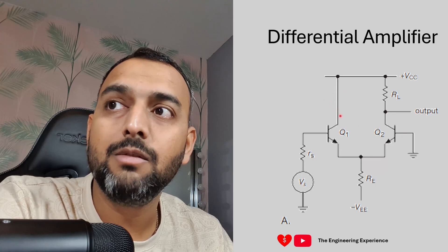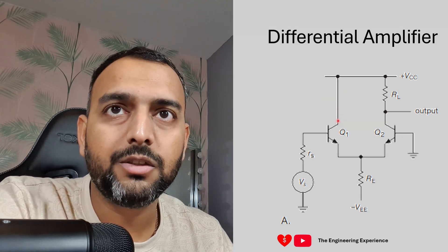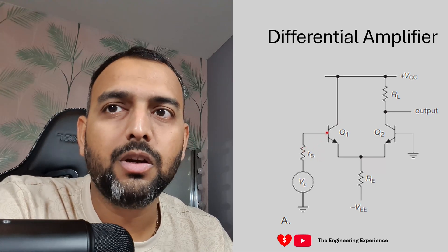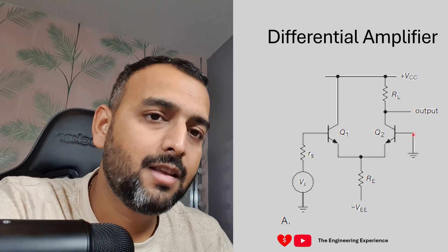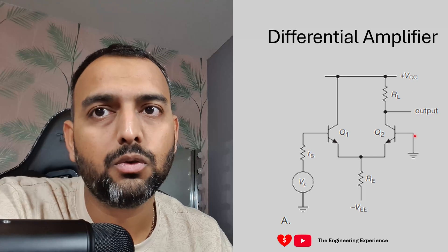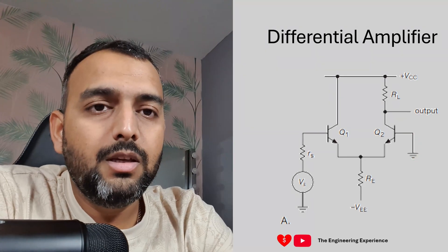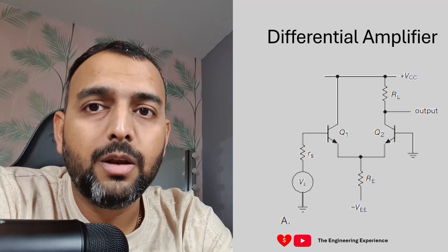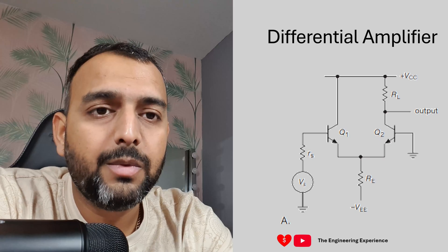To summarize: Q1 has no collector resistance, fixing its collector to a fixed voltage. When the source voltage varies, the collector voltage on Q1 does not vary, which negates the Miller effect. Additionally, the base input of Q2 has very low source impedance as it is connected to ground, which similarly negates the Miller effect for Q2.